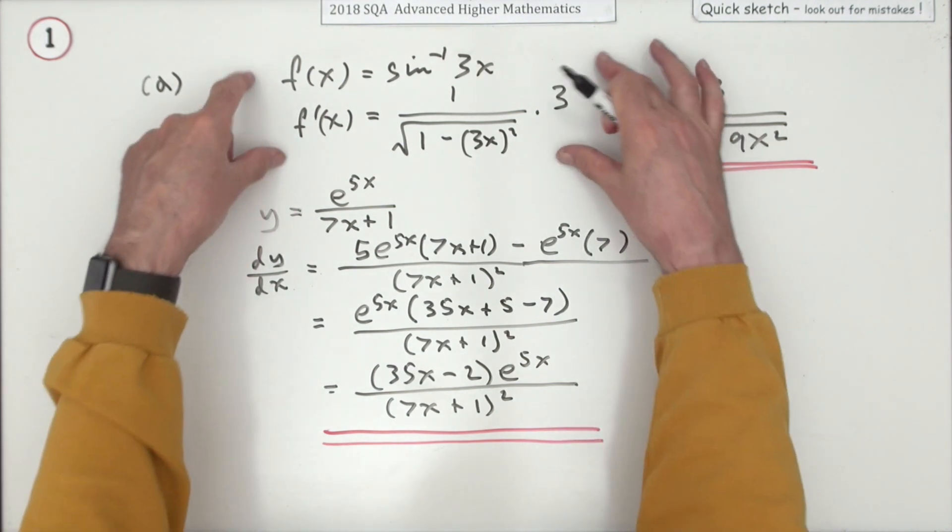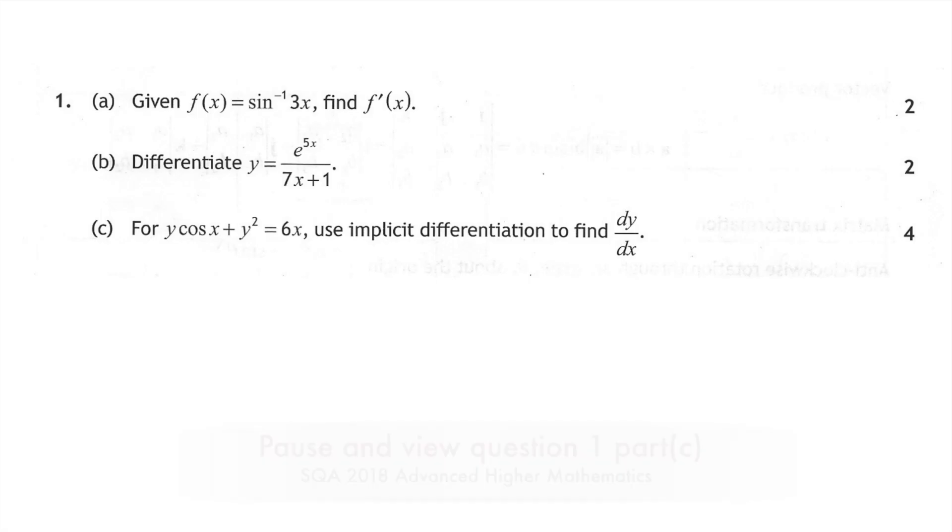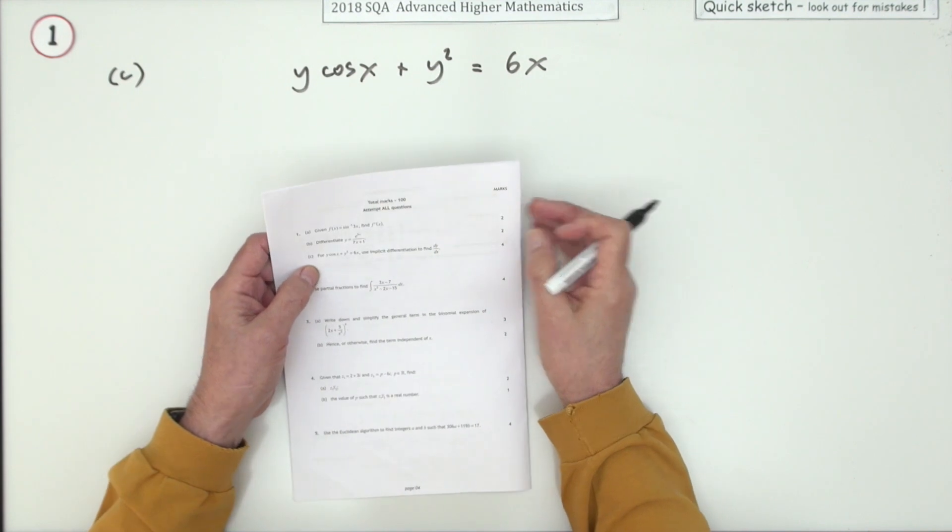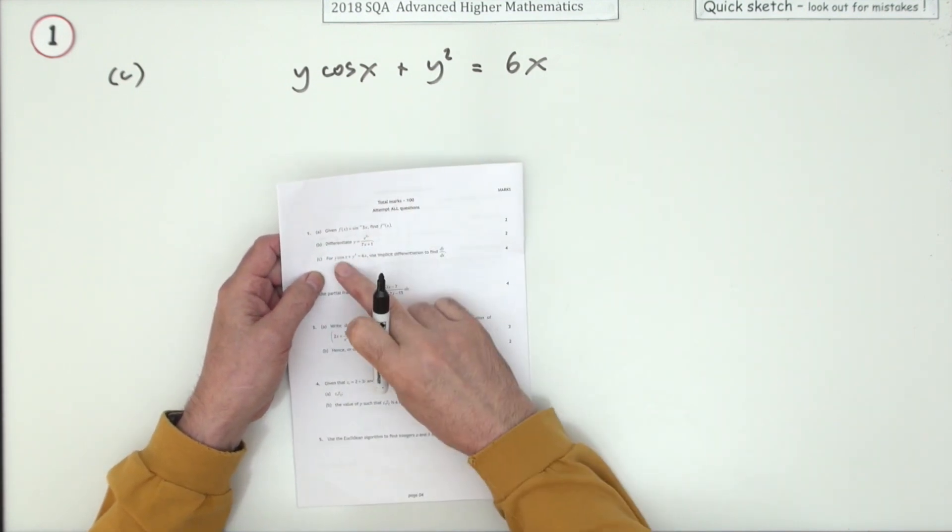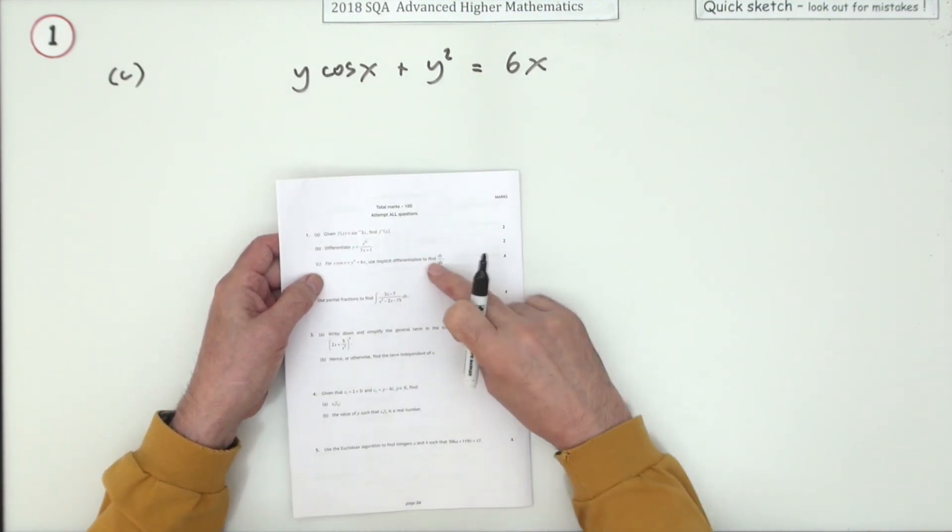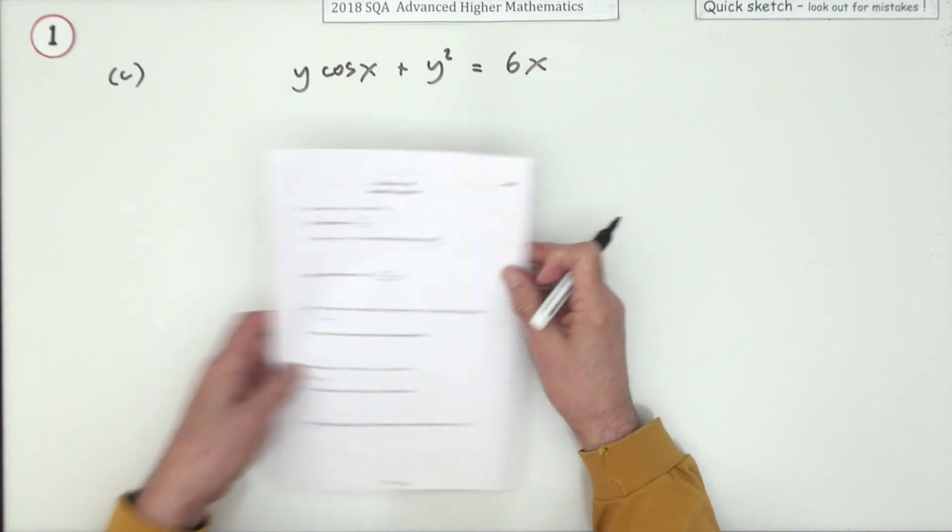Now it took more working for two marks than those two marks. And so to part C, for four marks now, a little bit longer, use implicit differentiation to find dy/dx.